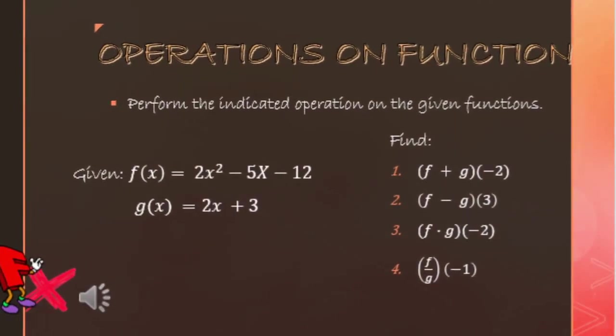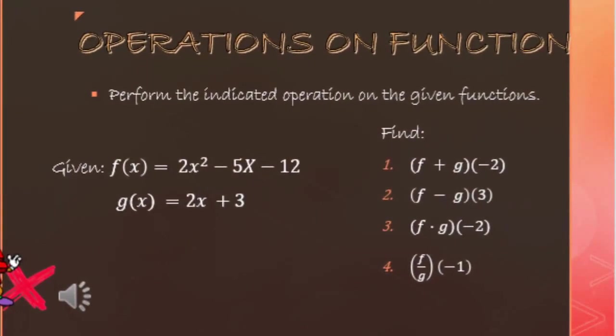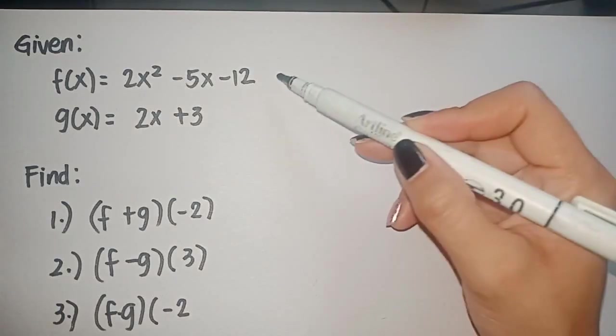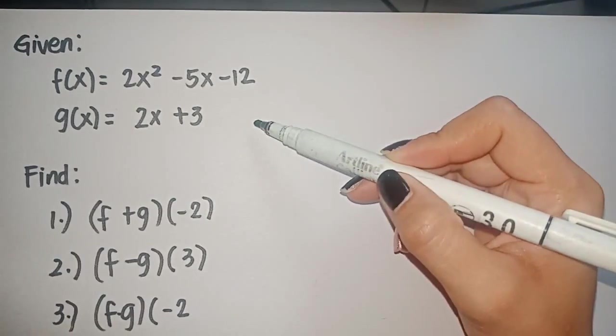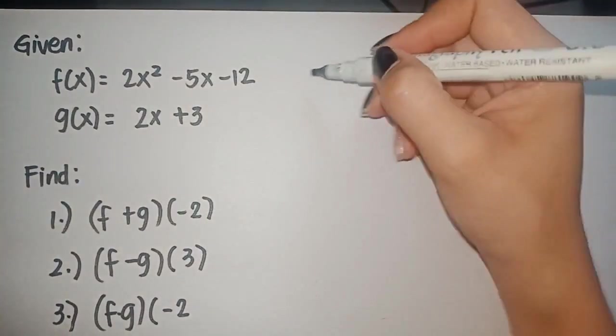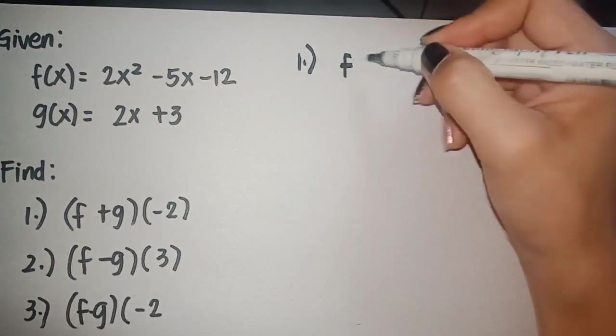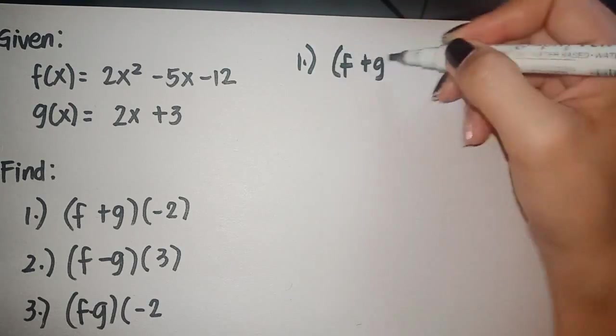Let's try out another example for the operations on function. For the given functions, f of x equals 2x squared minus 5x minus 12, and g of x equals 2x plus 3. We have to perform the indicated operations, and as you can see, we have values for x. So let's start.